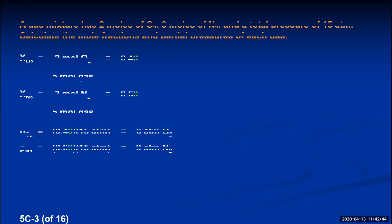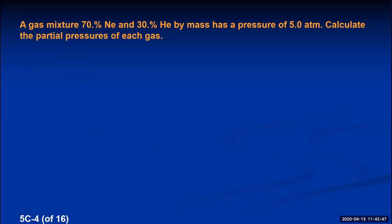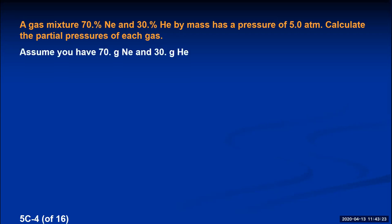Let's look at another example. We have a gas mixture that is 70% neon and 30% helium by mass with a total pressure of 5.0 atmospheres. Because the percentages are by mass, not by quantity, the mole fractions are not simply 0.7 and 0.3. We need to assume a fictitious amount of mass — 100 grams — so we have 70 grams of neon and 30 grams of helium.